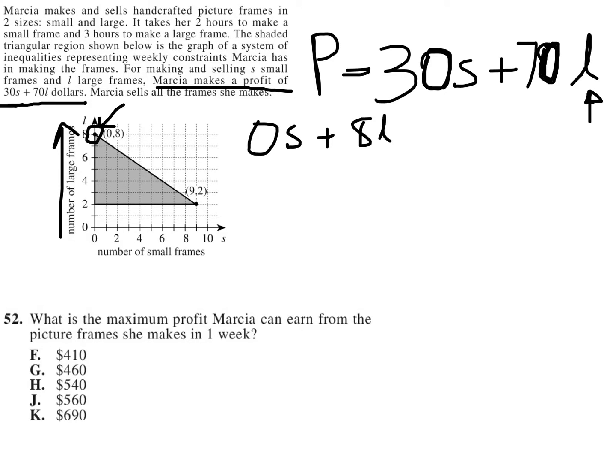8 large. So plugging that into the formula here, what I get is a profit of 30 times 0, because she's not making any small frames at all. Sorry, put a 0 there.